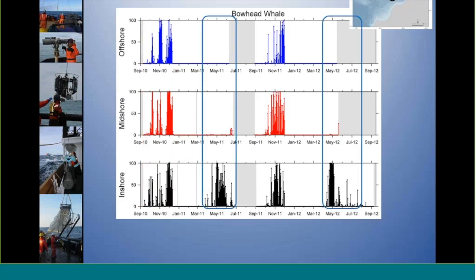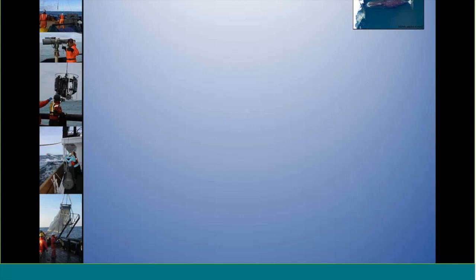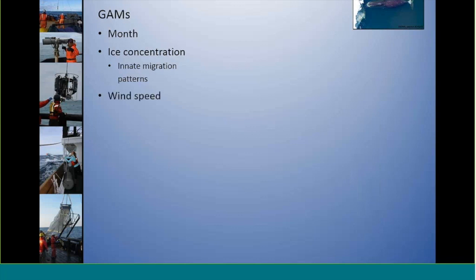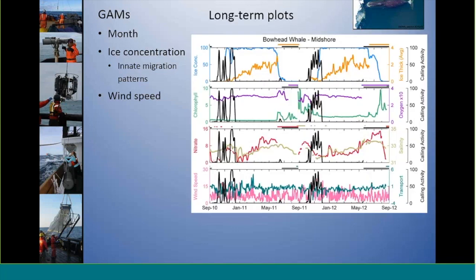The spring data were mostly isolated to the inshore recorder, likely due to the migration patterns of bowheads, as they used the nearshore leads in the ice to migrate north to their summer feeding grounds. When you correlate those data with oceanographic data, the GAM results showed both month and ice concentration were extremely significant, which is not surprising given the innate migration patterns of these animals. But interestingly, wind speed was also a significant factor in the GAMs.